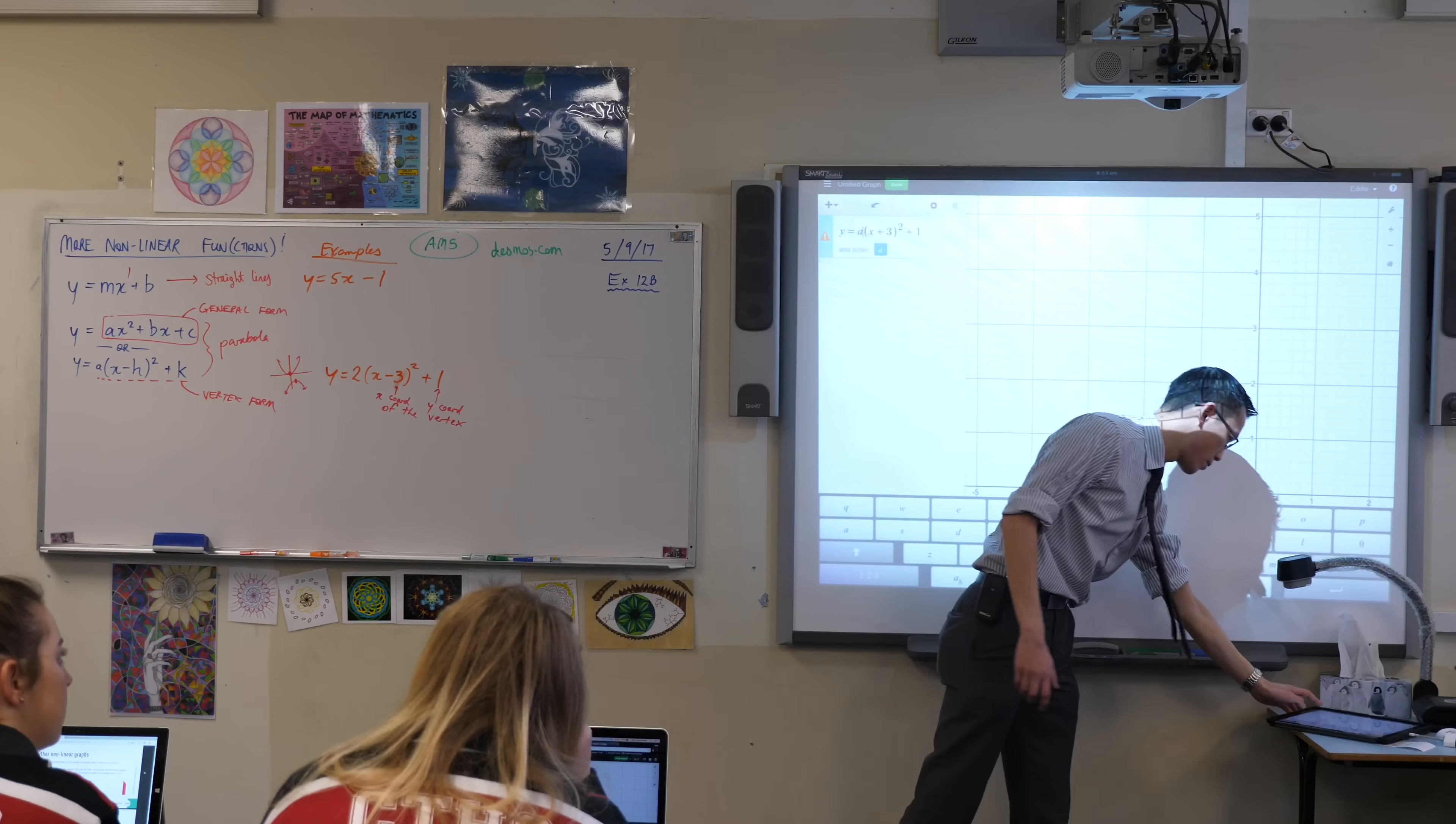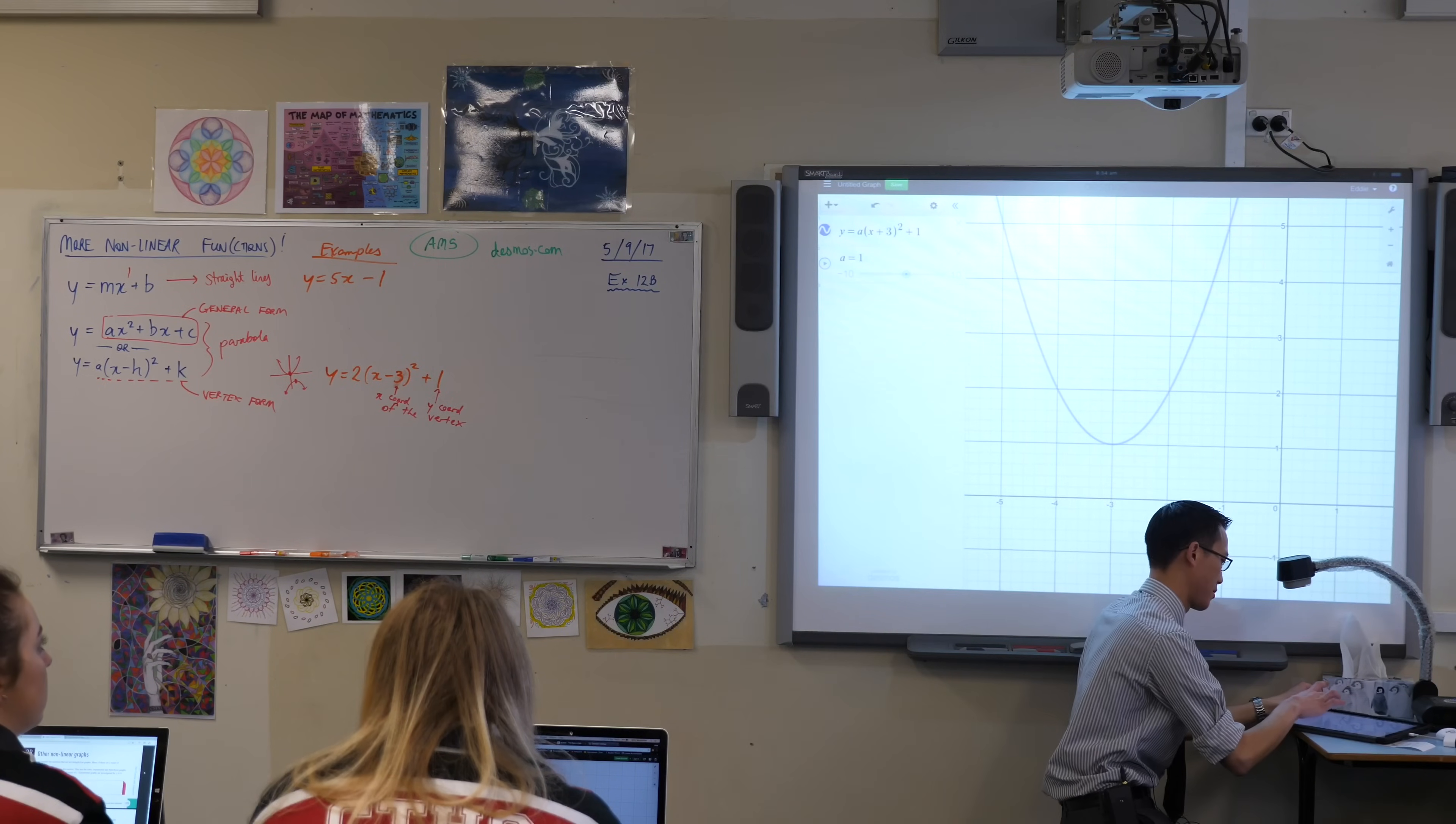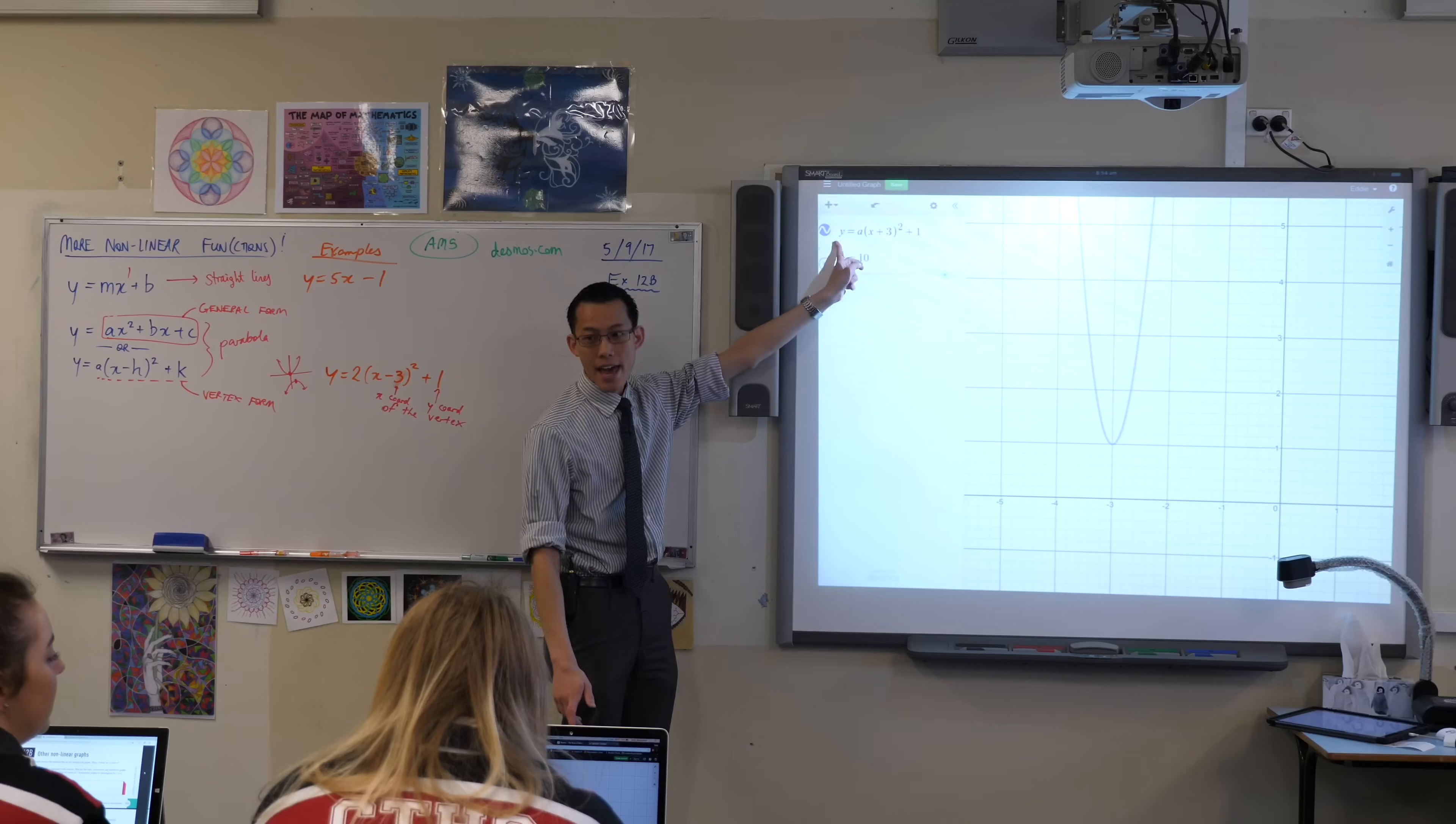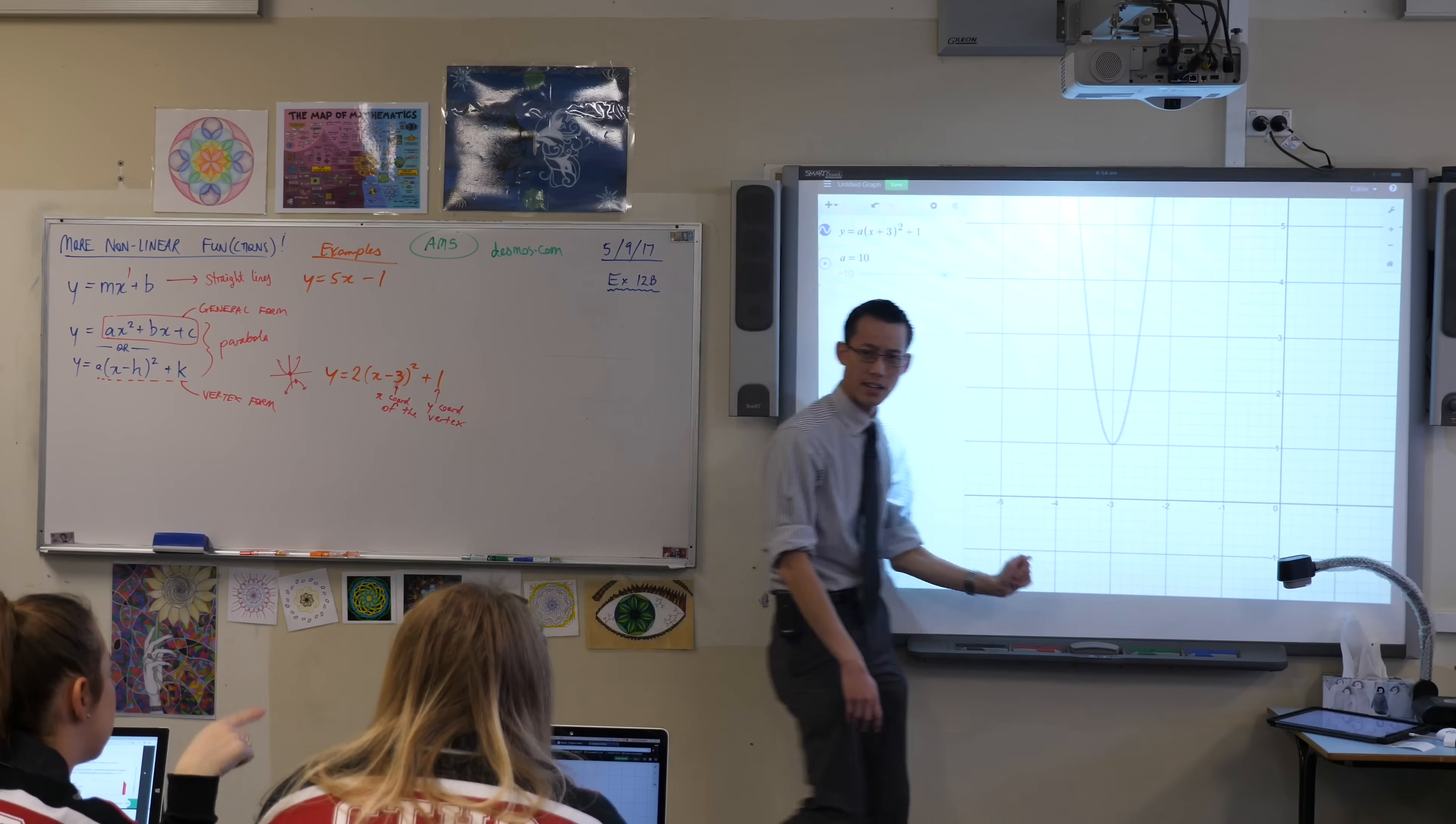This is the graph 1 x plus 3 all squared plus 1, because A equals 1 at the moment. So if I go ahead and I change A, watch what happens. As Raquel was mentioning, predicting, you can see as I make A bigger, this is 10 x plus 3 squared plus 1, it gets narrower and narrower and narrower. I went from 1 to positive 10. What would you predict happens if I went to the opposite direction over here, to negative values?